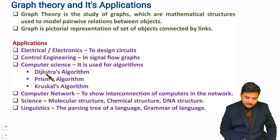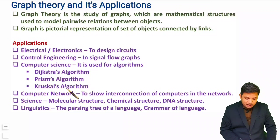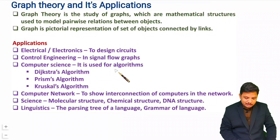In computer science, graph theory is used for algorithms like Dijkstra's algorithm, Prim's algorithm, and Kruskal's algorithm. These algorithms are used to find the shortest path from transmitter to receiver, and are also used to identify the maximum bandwidth path or possible paths between transmitter and receiver.